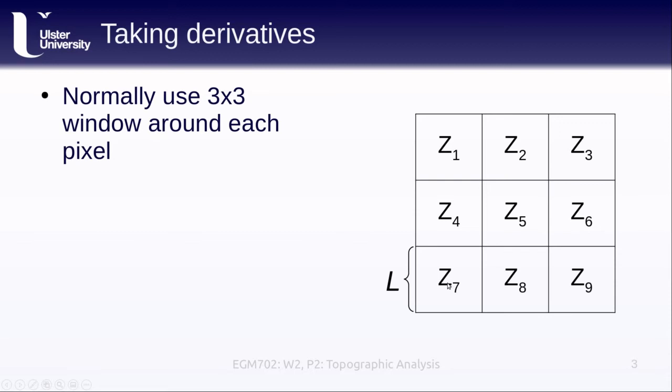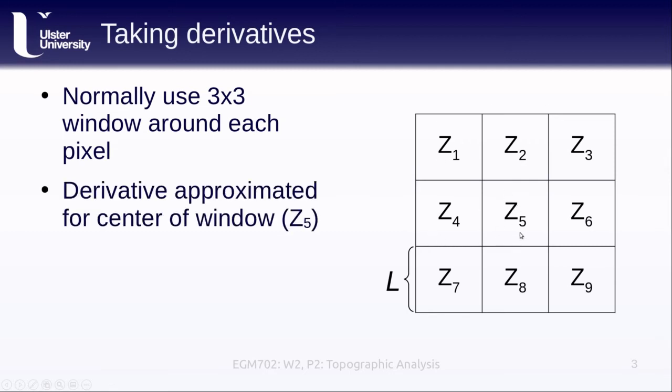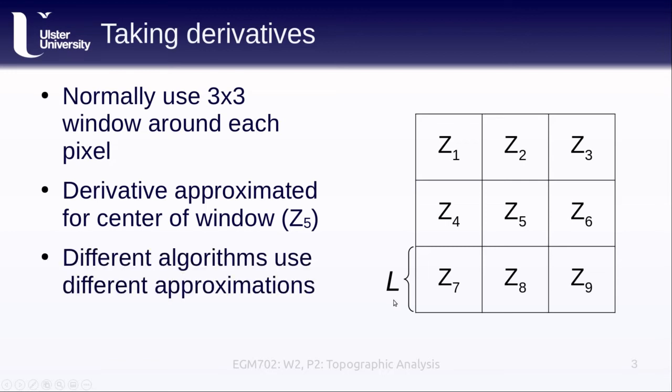If we look at this 3 by 3 grid, it's centered around a center pixel which is labeled z5 here, and each of the different cells has a width of what I'm calling L here. Different algorithms are going to use different approximations for the derivatives.